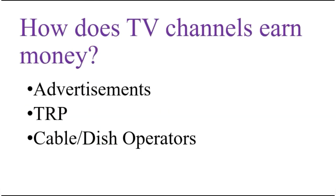Our first question: how do TV channels earn money? TV channels make money through 3 ways — through advertisements, through TRP, and through cable or dish operators. Advertisements and TRP are interlinked, and while explaining those topics, you will be able to understand the interlinkage between advertising and TRP.